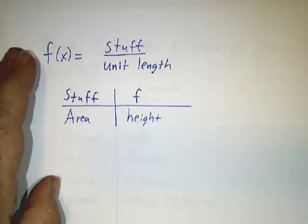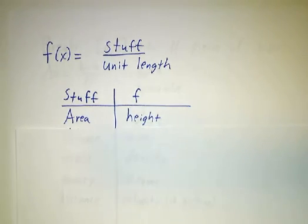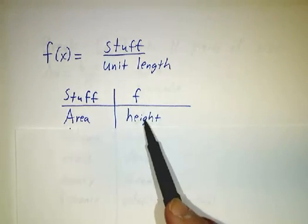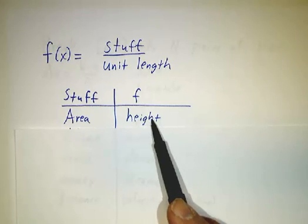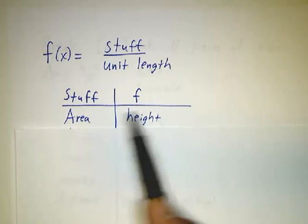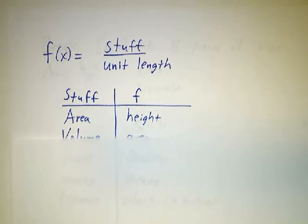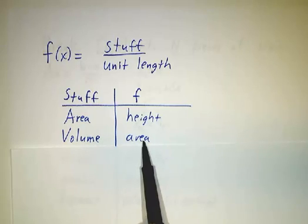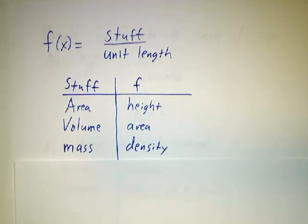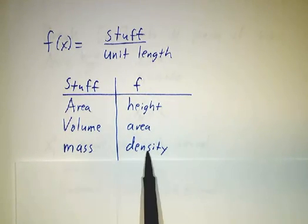Now, if you care about area, then f is just the height because the area of a rectangle is height times width. Area per unit length is height. But if you want to figure out volume, then f, the thing you're going to integrate, is the area.